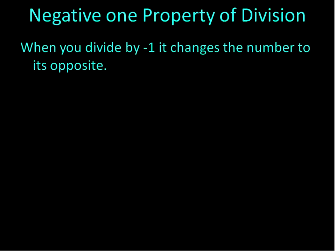Last property of division, the negative 1 property of division, which seems pretty straightforward as well. You're going to divide by negative 1. And just like when you multiply times negative 1, it's just going to change the number into being the opposite. So 15 divided by negative 1 gives you negative 15. The number's opposite.